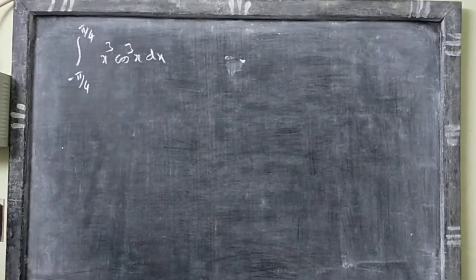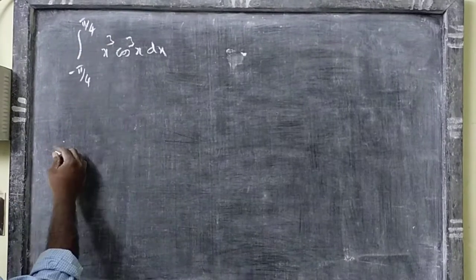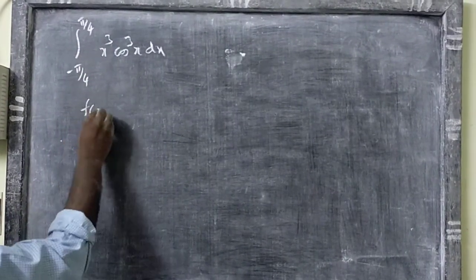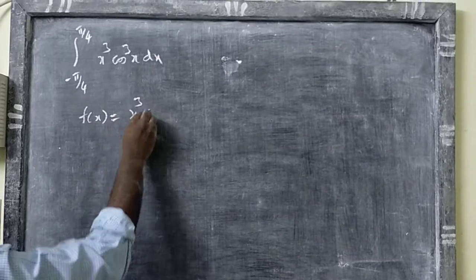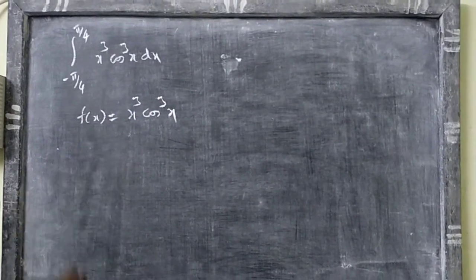So we can do the trigonometric functions here. Again, minus 5π/4 to plus 5π/4. Now we have to check here, what is it? Let f(x) equal to x³ cos²x. Here you can find the procedure.